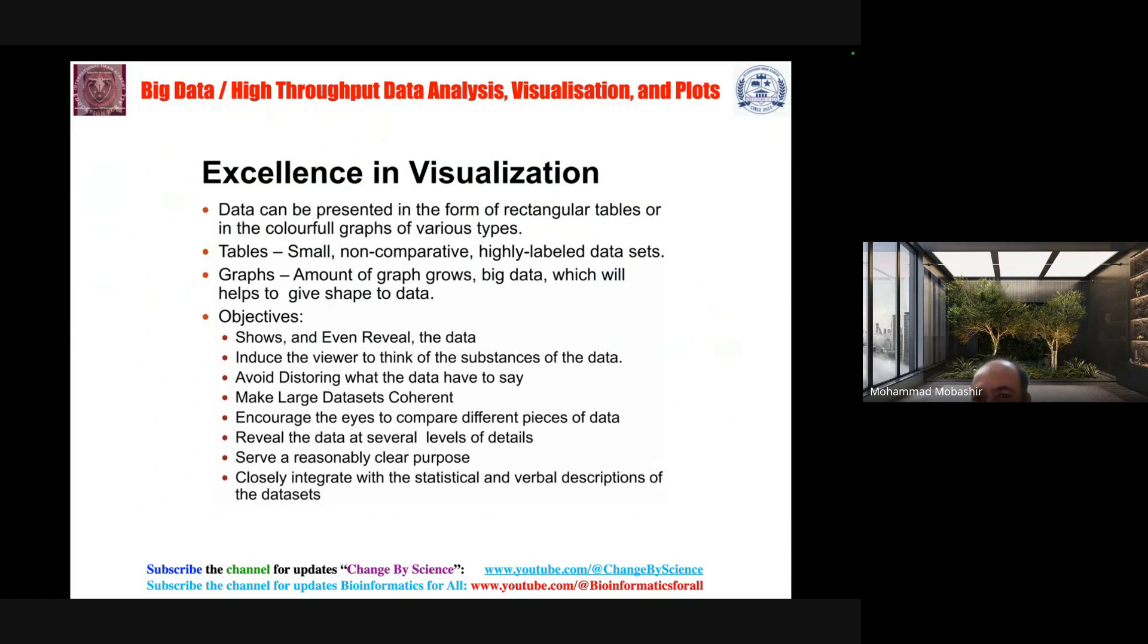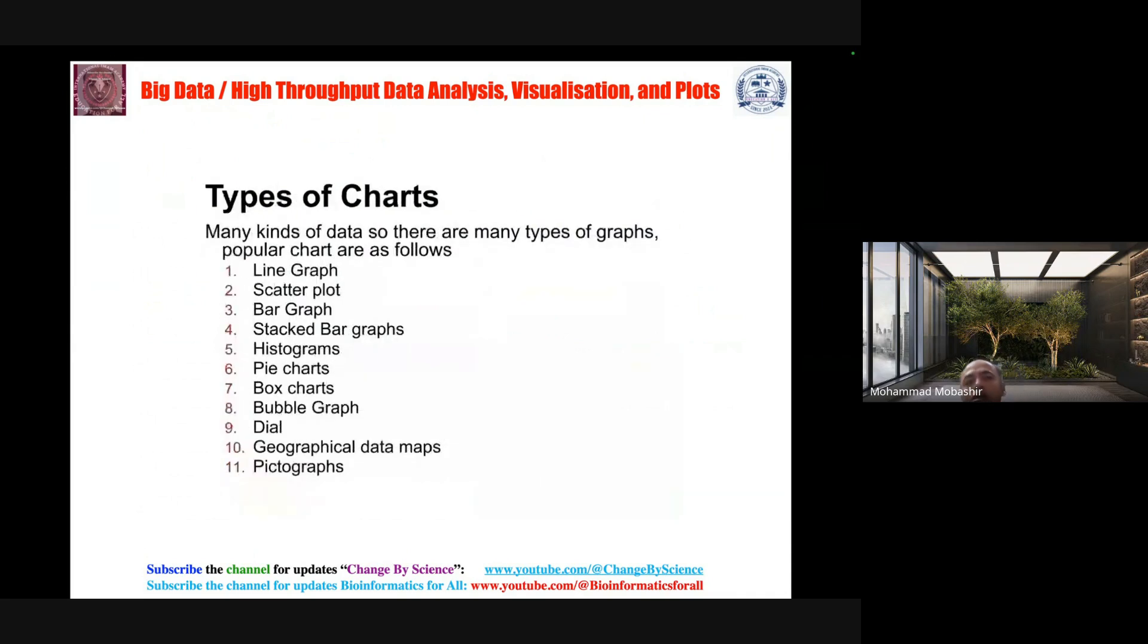Visualizations should serve a reasonably clear purpose and closely integrate with statistical and verbal descriptions of the data sets. Types of charts include line graphs, scatter plots, bar graphs, stacked bar graphs, histograms, pie charts, box charts, bubble graphs, geographical data maps, and pictographs.